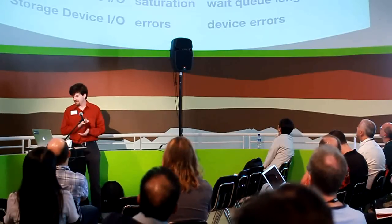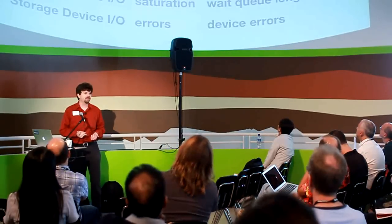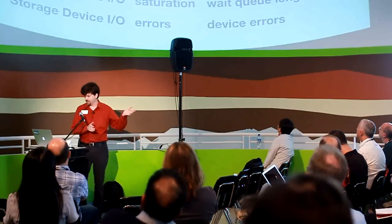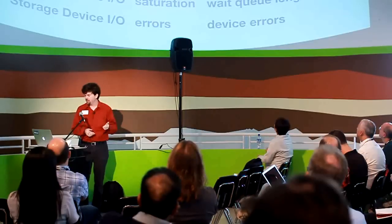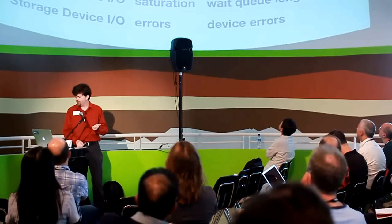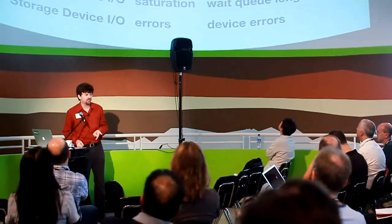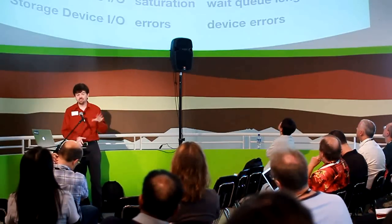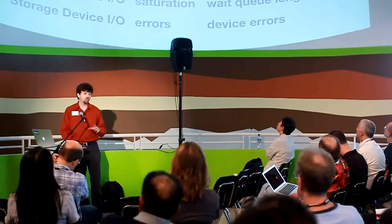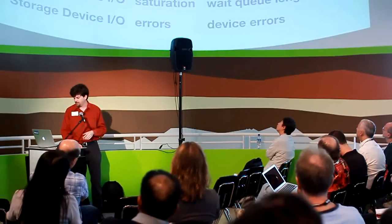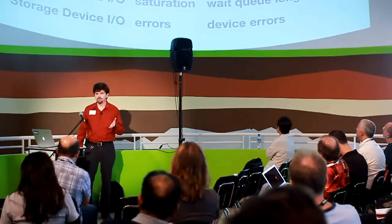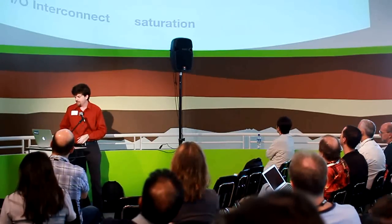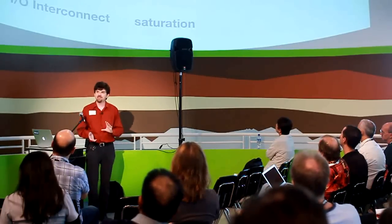Memory utilization, if we treat that as a capacity resource, would be the available memory. Saturation you could call paging or swapping. Network interface utilization — you can just use throughput over bandwidth; it should work, it's almost the same as percent busy. For storage device IO I have a full list of all the combinations. I just want to give you an idea of the easier ones and the harder ones.